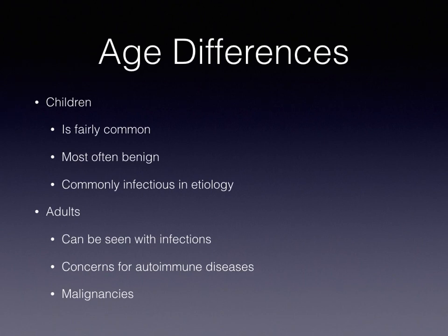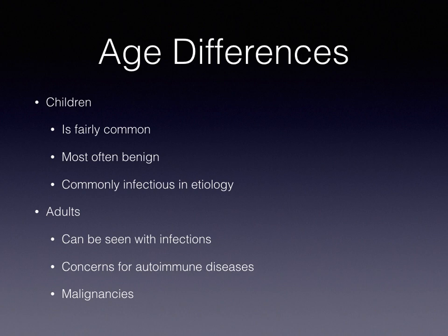When we look at lymphadenopathy, there are differences between age groups. In children, lymphadenopathy is seen more commonly with infectious processes and is relatively common and often benign. However, we need to do a good history and physical to identify red flags, as children can also have lymphadenopathy from autoimmune issues and malignancies. Adults over the age of 40 are at higher risk for malignancies — those over 40 are exponentially more at risk. Men are also at higher risk for malignancies more so than women, and Caucasians as a race are also at higher risk.